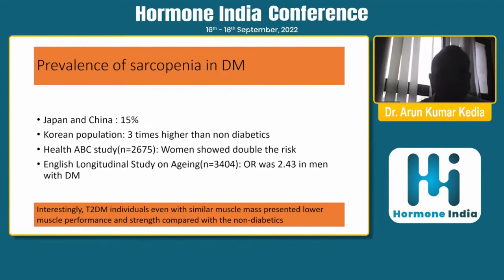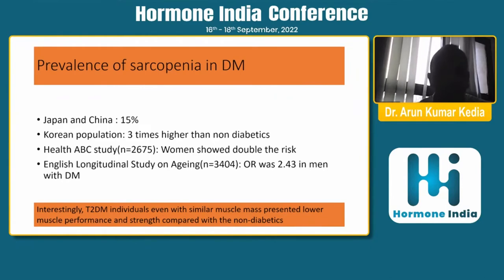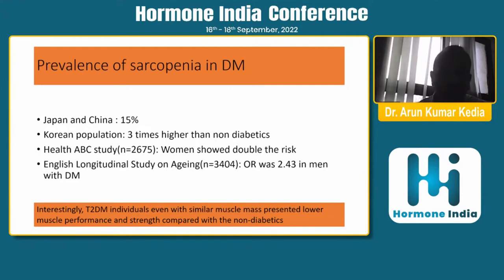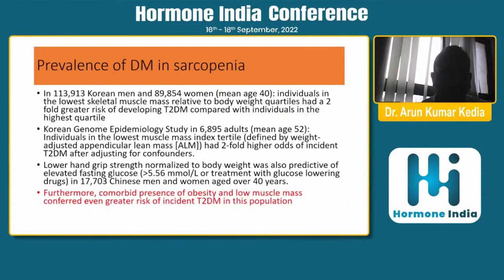Interestingly, it has also been found that type 2 diabetes patients, even with similar muscle mass, present with lower muscle performance and strength compared with non-diabetic individuals. So muscle mass may not be the only measure — muscle performance and strength are other ways to diagnose sarcopenia.